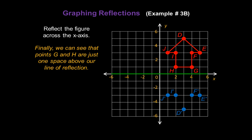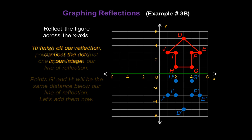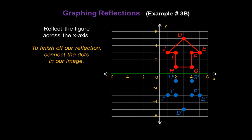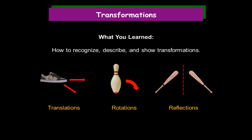Finally, we can see that points G and H are just one space above our line of reflection, so points G prime and H prime will be the same distance below our line of reflection. Let's go ahead and add them now — this will be point G prime, and this will be point H prime. To finish off our reflection, just connect the dots in the image. And there you have it — our figure reflected across the x-axis. Congratulations! You've learned how to recognize, describe, and show transformations.